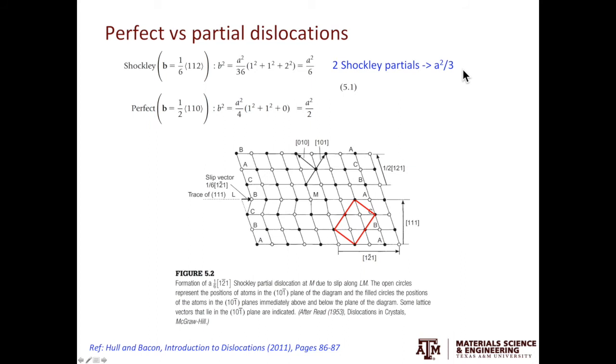How about a full dislocation? For a full dislocation, the Burgers vector is half 110. Then b squared is a squared over 2. A squared over 2 is greater than a squared over 3. Therefore, in terms of strain energy, it's energetically favorable to have two partials over one full dislocation.